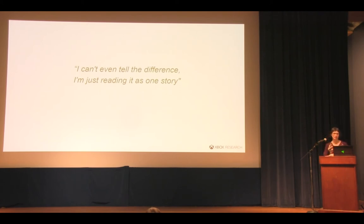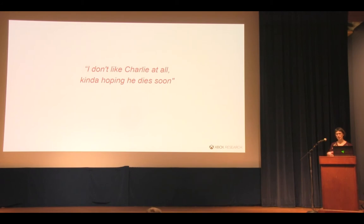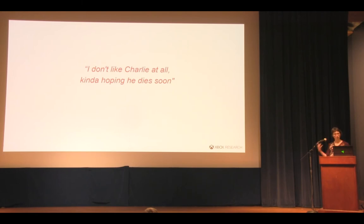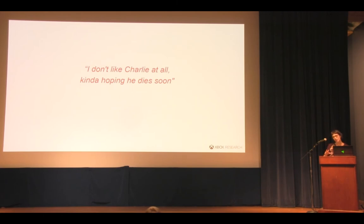The not-so-good feedback was things like 'I don't like Charlie at all, I'm kind of hoping he dies soon.' This is actually surprisingly common — and on one hand it's a great sign, because the moment you get people talking about characters rather than plot minutia, it means they're engaging with the experience. But the problem, also common, was too many reversals. The narrative team was trying to surprise people, resulting in characters with fake-out deaths. The feedback was: 'I really hope he's dead. They all just betray each other. These are terrible people.'